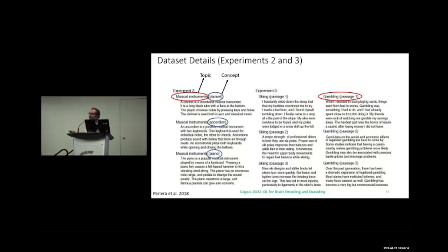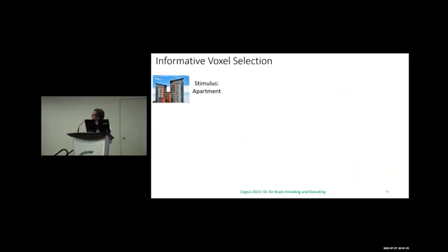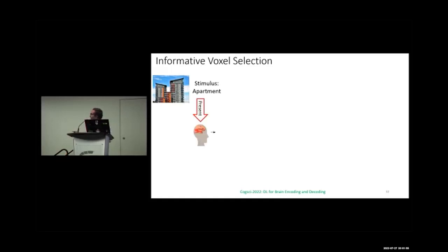Since the fMRI comes as a 3D volume with more than 200,000 voxels, giving all 200,000 voxels to a regression model creates a dimensionality problem. To address this, they focused on informative voxels. They presented the stimulus to a subject, obtained the 3D brain image, and also obtained the stimulus representation.